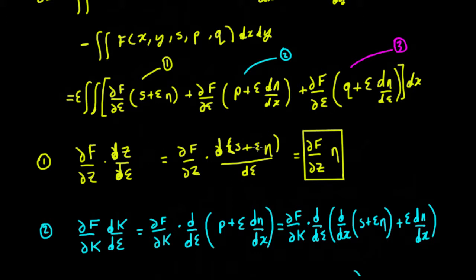So we have partial f by partial z times d/d·epsilon of z. Well, z is just our s plus epsilon·η. We differentiate s with respect to epsilon — s is a function of x and y, not epsilon, so that disappears. If we differentiate epsilon with respect to epsilon we get one times η. And if we differentiate η(x) with respect to epsilon, that gives us zero. So we're just left with one term from this differential, which is η, multiplied by partial f by partial z. So the first term gives us (∂f/∂z)·η.